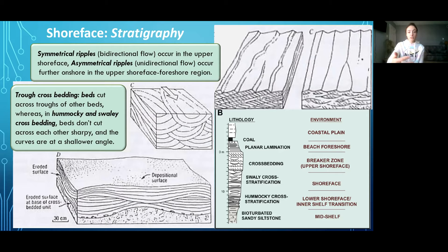Now, to make some distinctions between sedimentary structures: symmetrical ripples are typical of bi-directional flow, which is typical of the upper shoreface environment, whereas asymmetrical ripples are typical of unidirectional flow — things like river systems, eolian systems with a consistent wind direction. Asymmetrical ripples also occur in shoreface environments, but not in the upper shoreface — they occur further onshore in the foreshore region where waves begin to have a consistent forward velocity not met by the backswash.